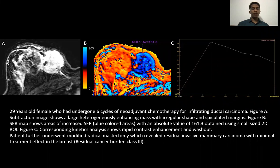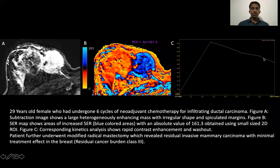Case 1: A 29-year-old female who had undergone six cycles of neoadjuvant chemotherapy for infiltrating ductal carcinoma. The subtraction image shows a large heterogeneously enhancing mass lesion with irregular shape and spiculated margins. The corresponding SER map shows areas of high SER indicated by regions colored in blue. A small 2D ROI revealed a high SER value of 161, and the corresponding kinetic analysis revealed washout kinetics. The patient underwent modified radical mastectomy, which revealed residual invasive mammary carcinoma with minimal treatment effect.